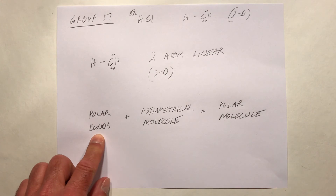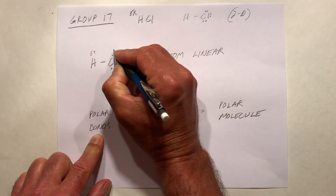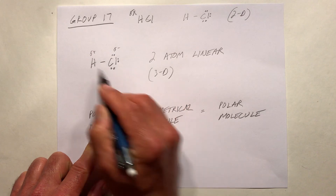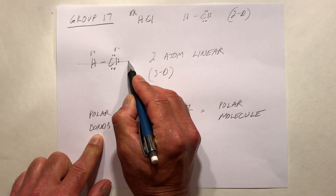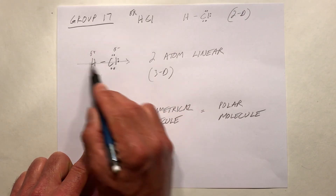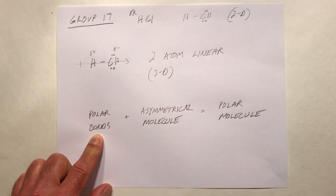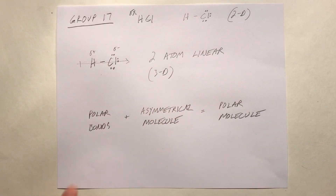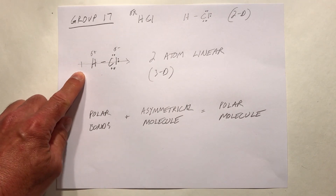That has polar bonds — H would be delta plus and Cl would be delta minus. Because of the asymmetry on that molecule, it's going to be a polar molecule. We draw that polarity with an arrow pointing to the negative side of the molecule and a plus sign on the tail indicating the positive side.